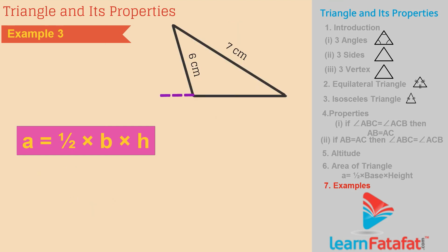Example 3. For base equal to 3 cm and height equal to 5 cm, area of triangle is 7.5 cm square.